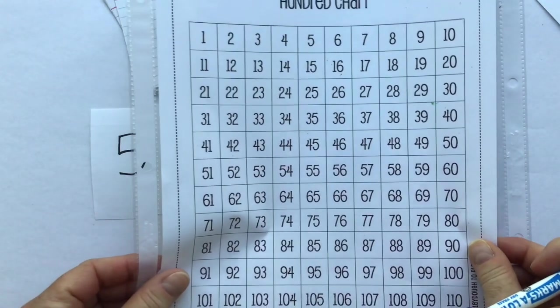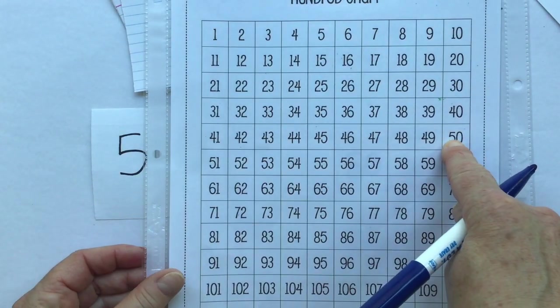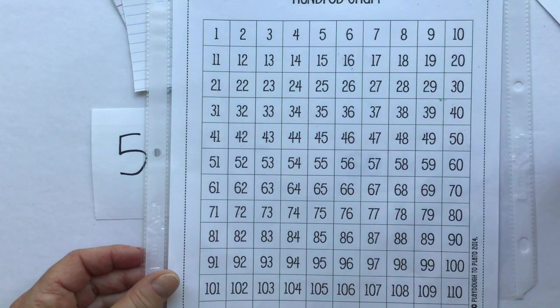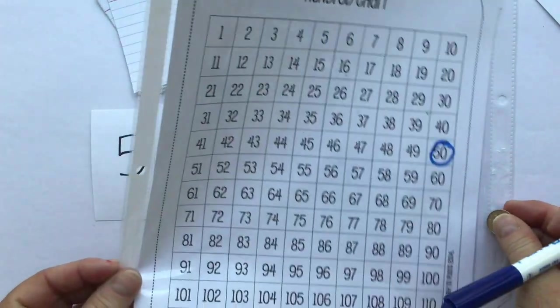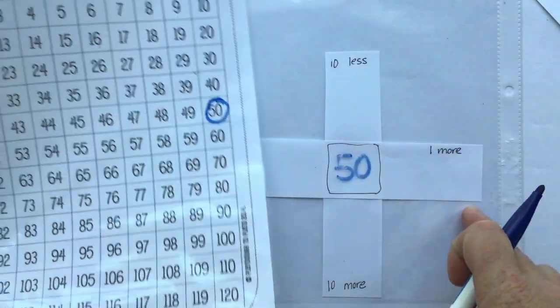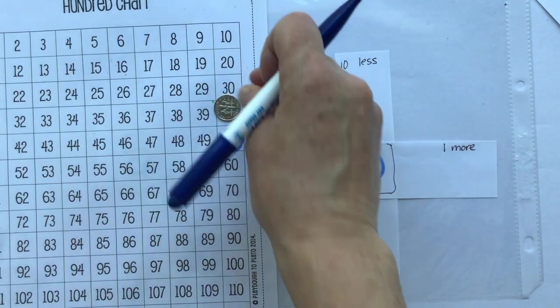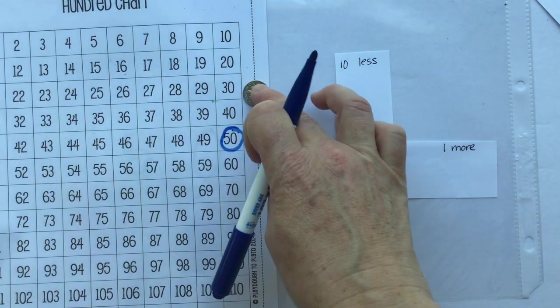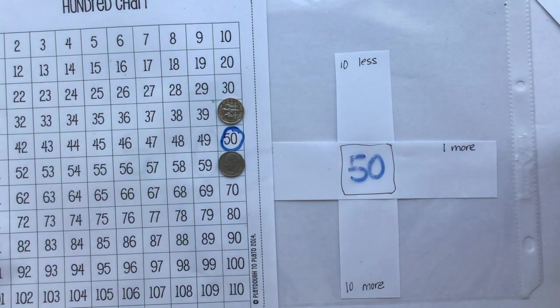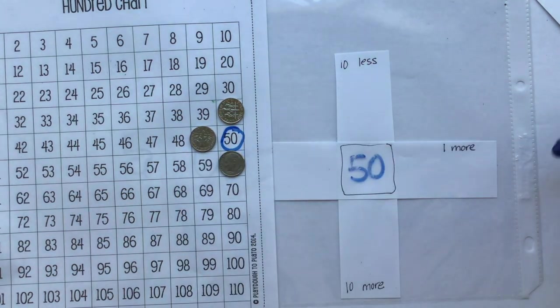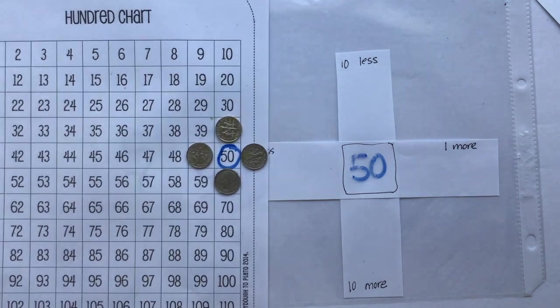All right. Now, we find the number 50 on our place value chart. Using my coins, I'm going to put a coin in each of the places that I need for my numbers. I know if I go up the numbers chart, that number right there is 10 less, 10 more, one less. Well, this one's tricky because to have it look like my number board, it would look just like that.